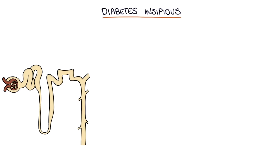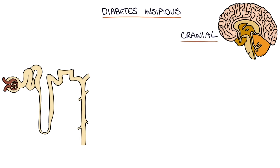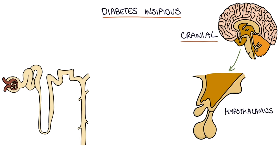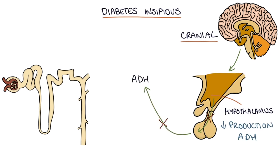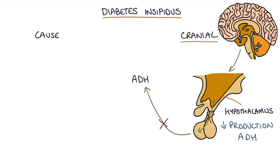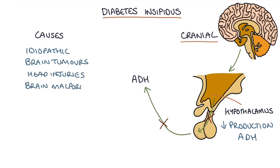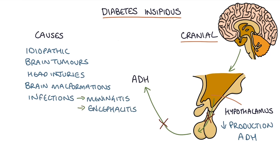Next, let's talk about cranial diabetes insipidus. This is where the hypothalamus does not produce ADH for the pituitary gland to secrete. This can be idiopathic without any clear cause, or it can be caused by brain tumors, head injuries, brain malformations, infections such as meningitis, encephalitis, and TB, or brain surgery or radiotherapy.